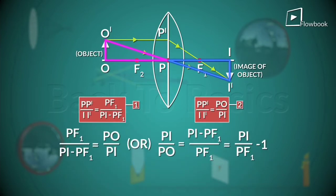On dividing throughout by PI, we get one by PO plus one by PI is equal to one by PF1.